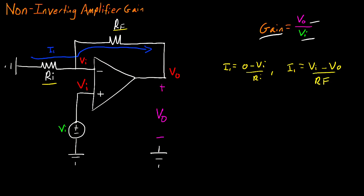At this point, I can equate these two together and begin solving with that ratio, Vo divided by Vi. So that's going to look like negative Vi divided by Ri is equal to Vi divided by Rf minus Vo divided by Rf. And I'm going to move that Vi to the other side. So now we'll have minus Vi divided by Ri minus Vi divided by Rf is equal to negative Vo divided by Rf.